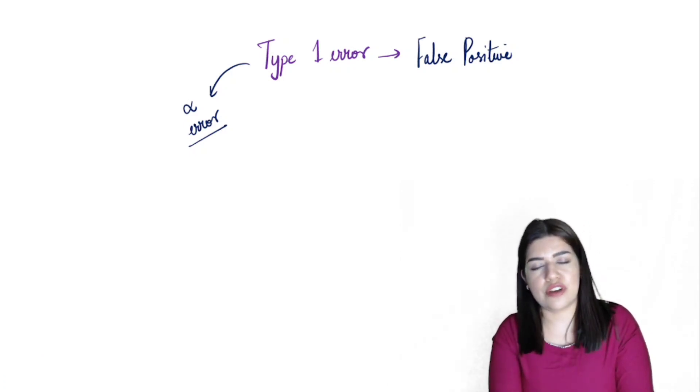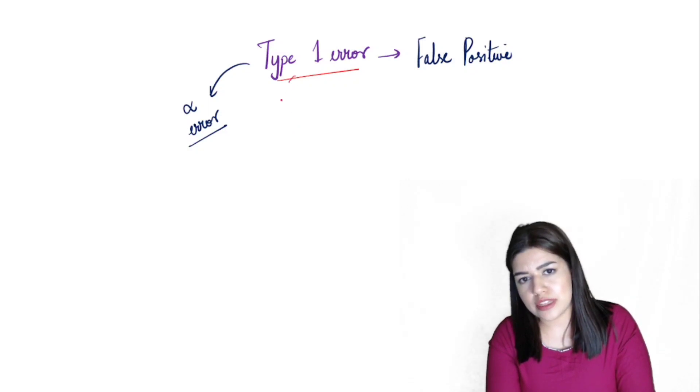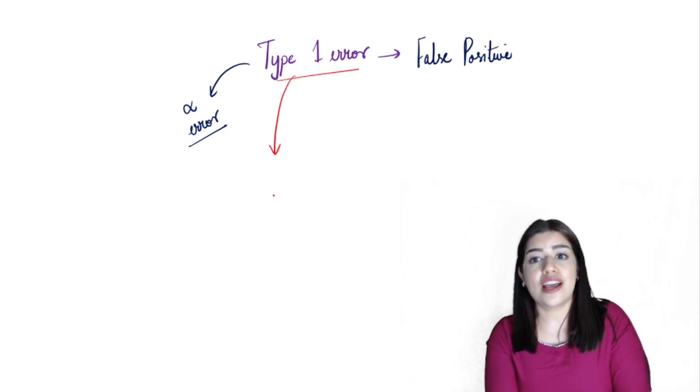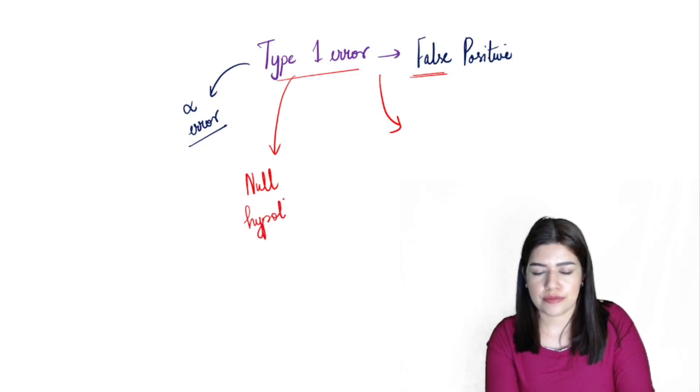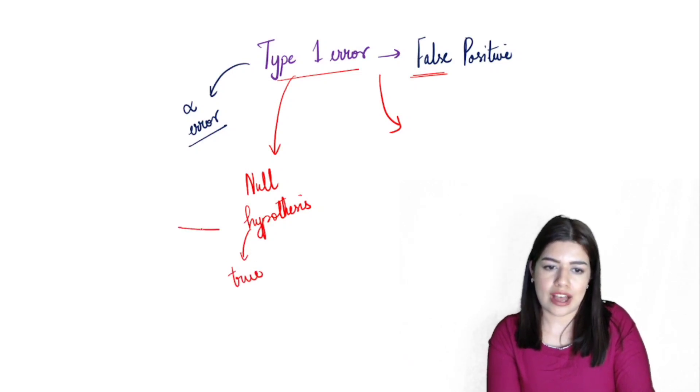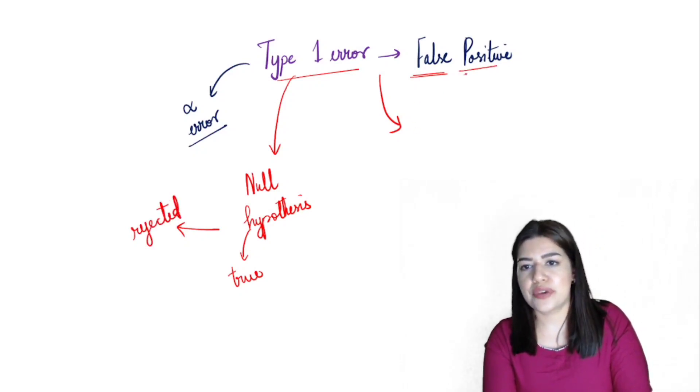Now what have I done wrong here if I'm committing the Type 1 error? That means that my null hypothesis was true, but I have rejected it and I have falsely accepted an alternative hypothesis which ideally should have been rejected. I might sound confusing at first, but it gets really easy once you understand what is actually happening here.